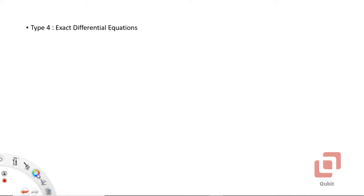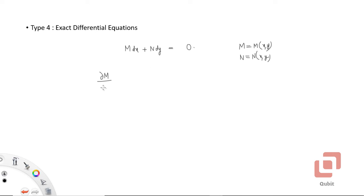The next type of differential equations we are going to study is exact differential equations. The standard form of first-order, first-degree differential equations is M dx + N dy = 0, where M and N are functions of both variables, a single variable, or constants. The necessary and sufficient condition for this differential equation to be exact is: the partial derivative of M with respect to y equals the partial derivative of N with respect to x.